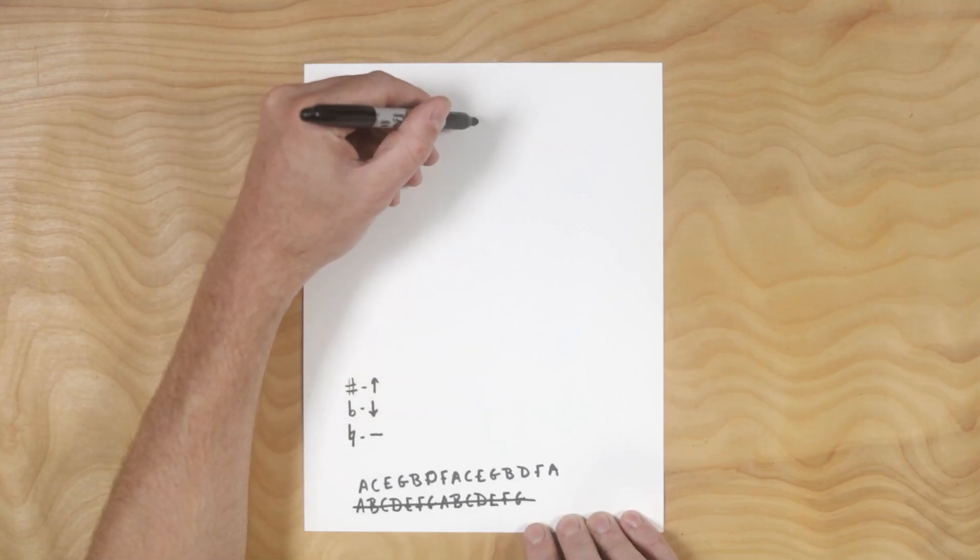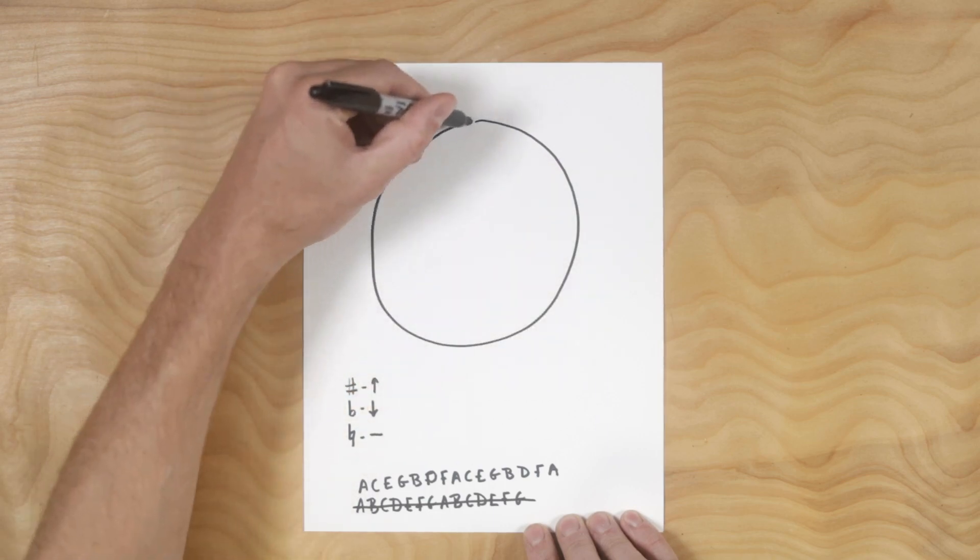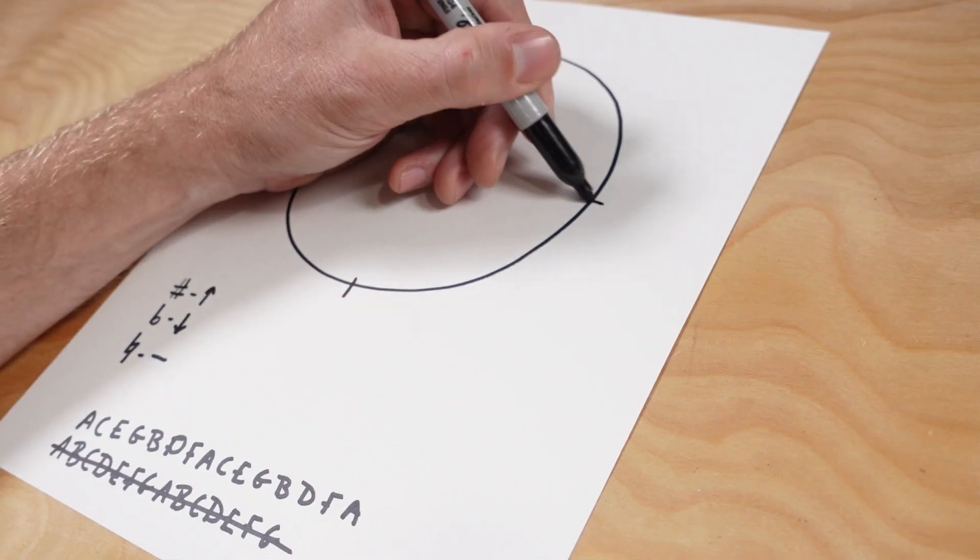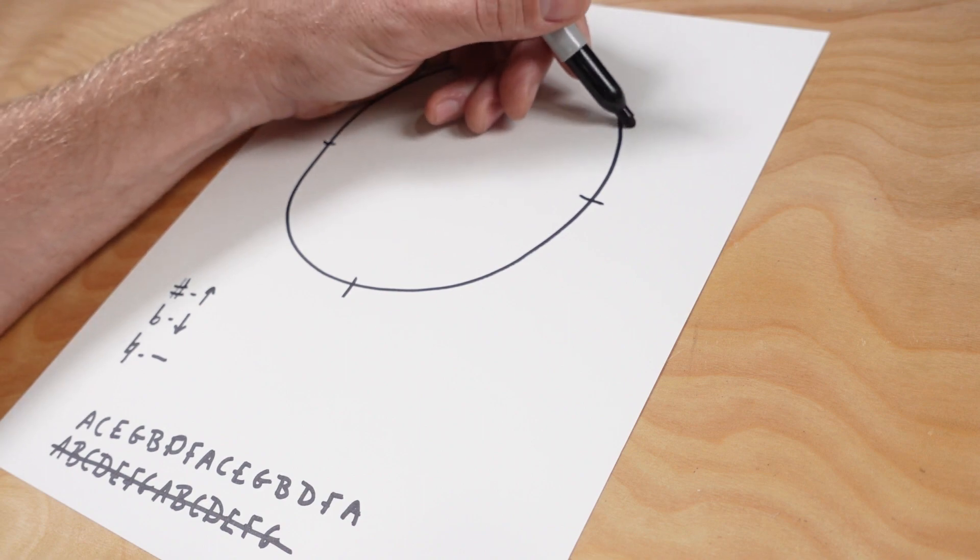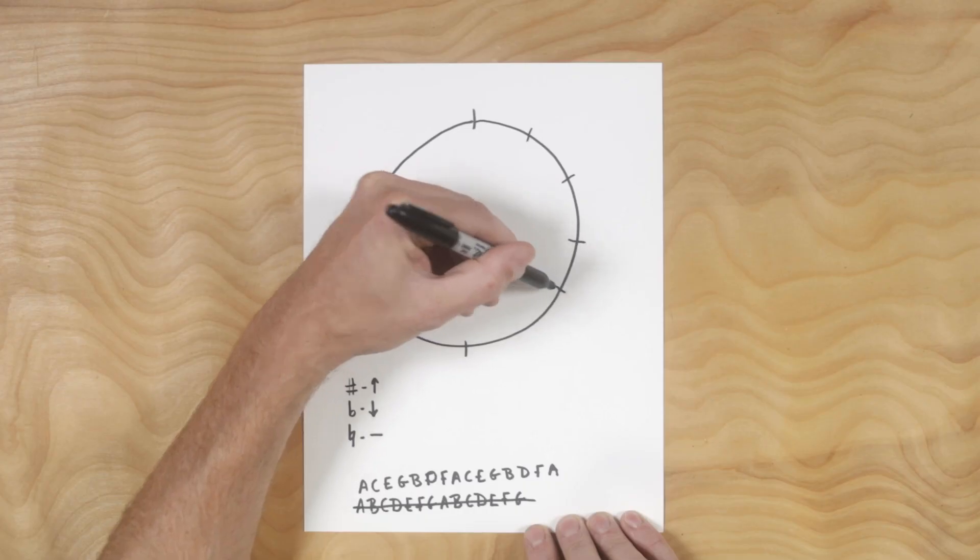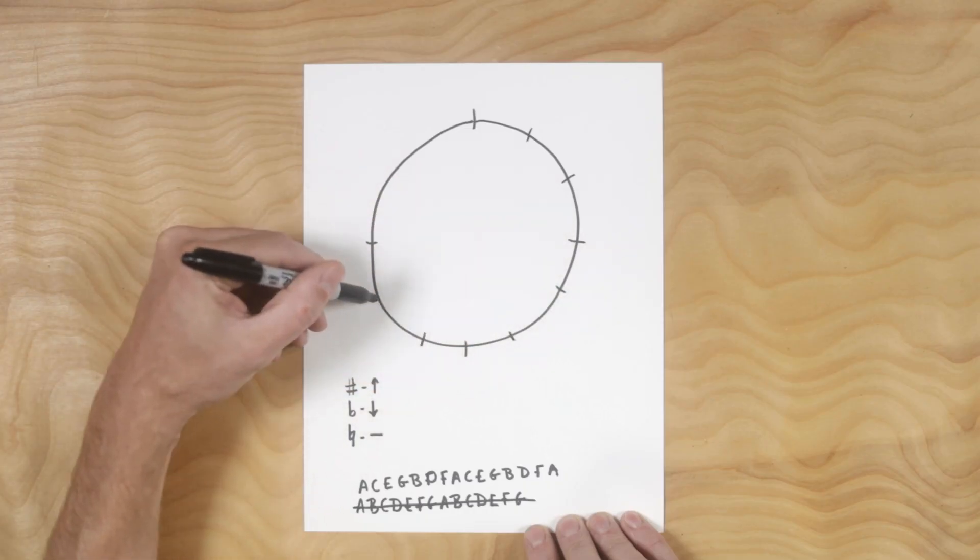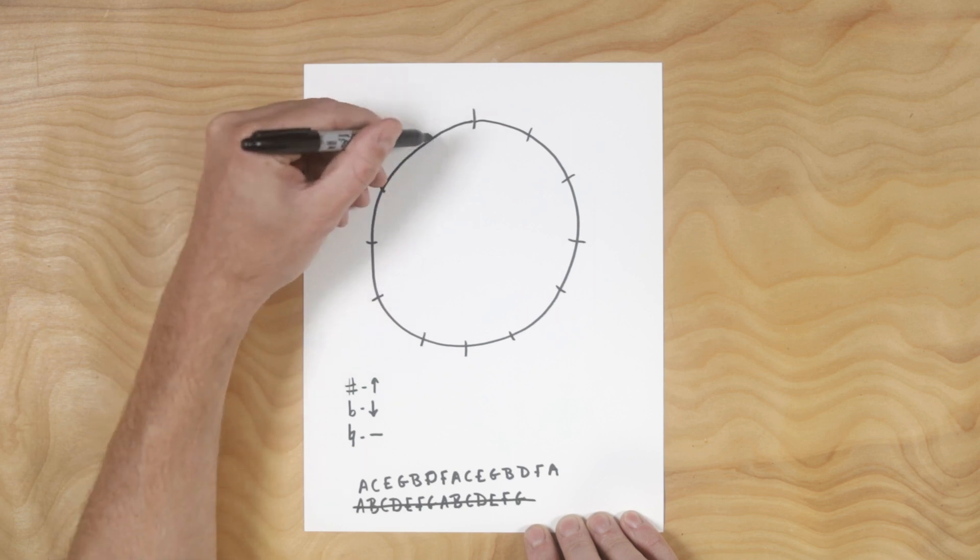So now we're going to draw our circle of fourths. Circle of fourths is like a clock. I'm going to start with my 15 markers and then I'm going to go one third, two thirds, one third, two thirds, one third, two thirds.